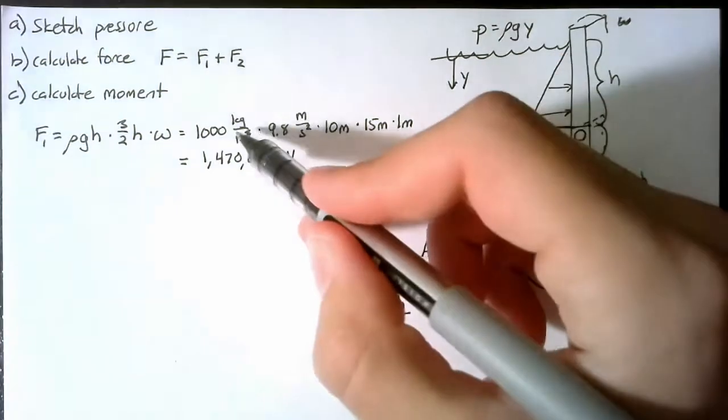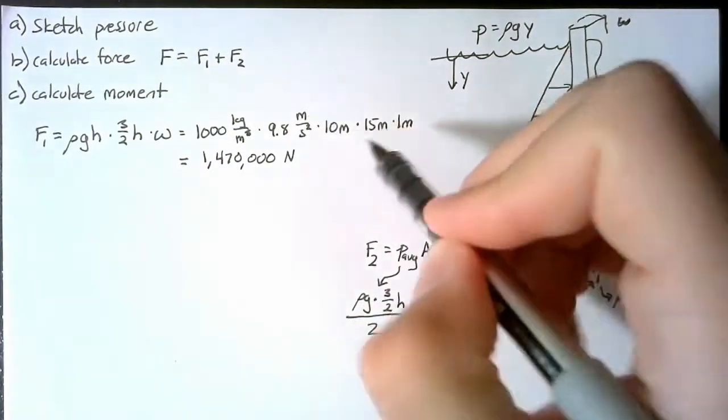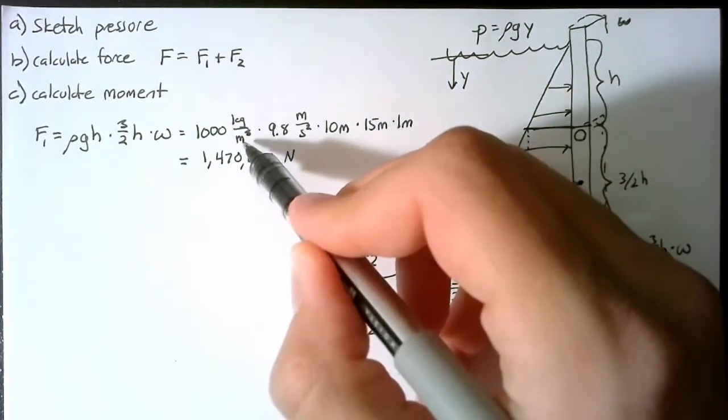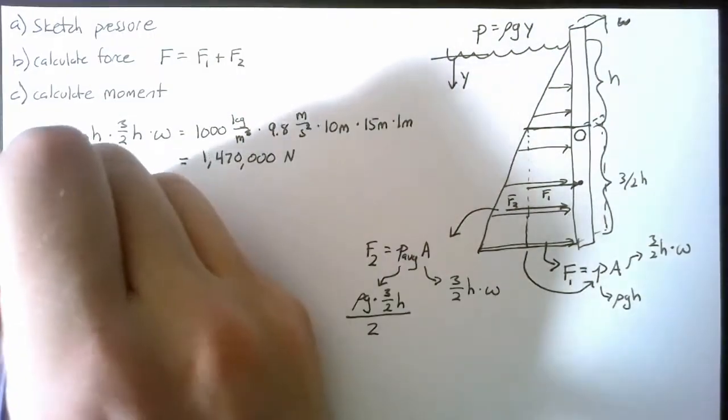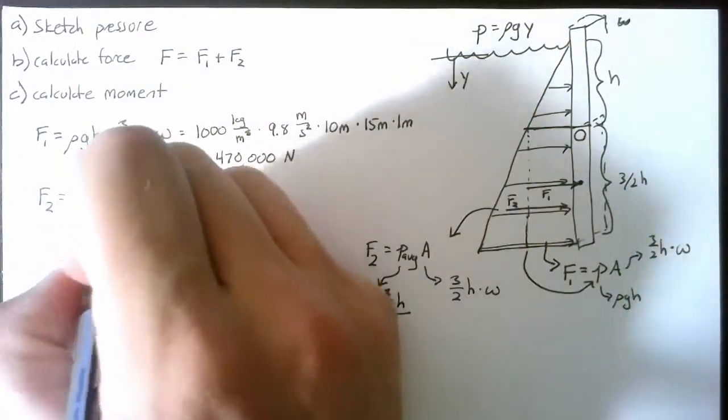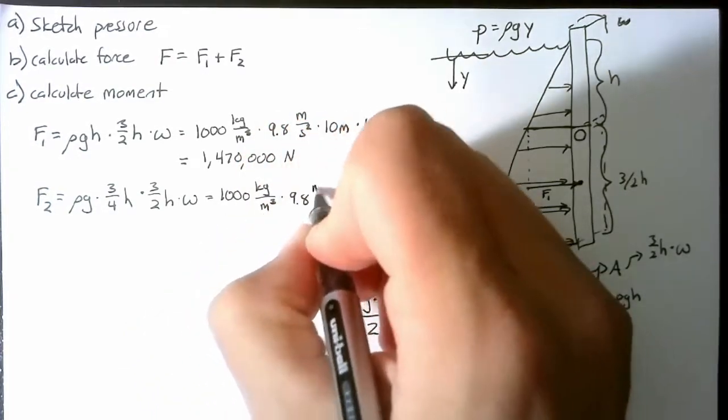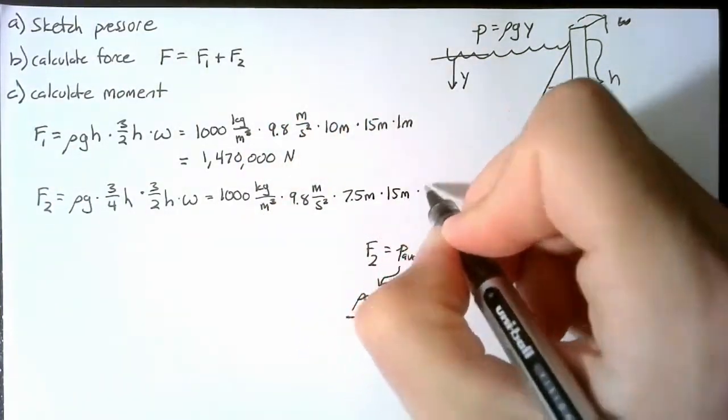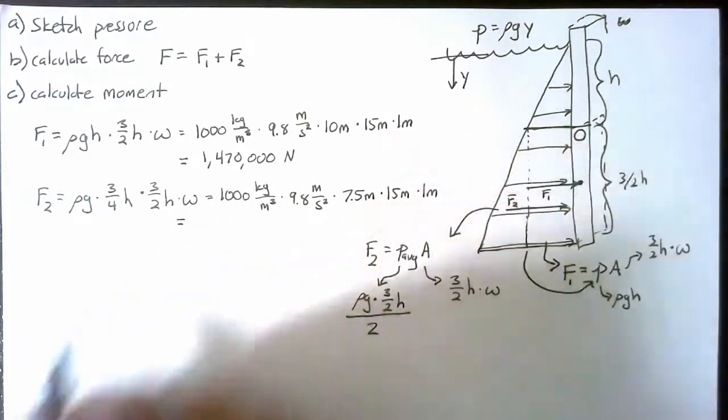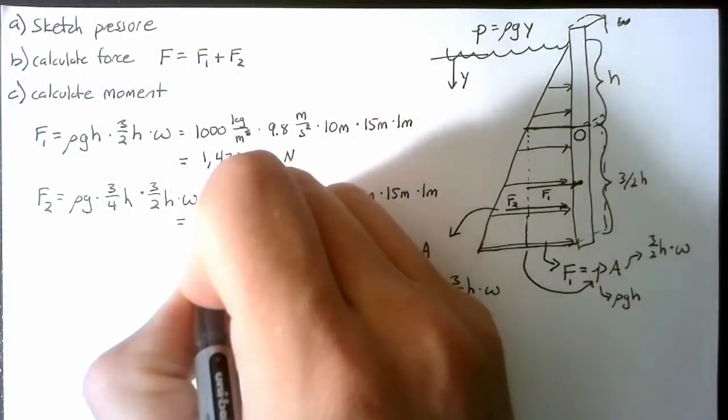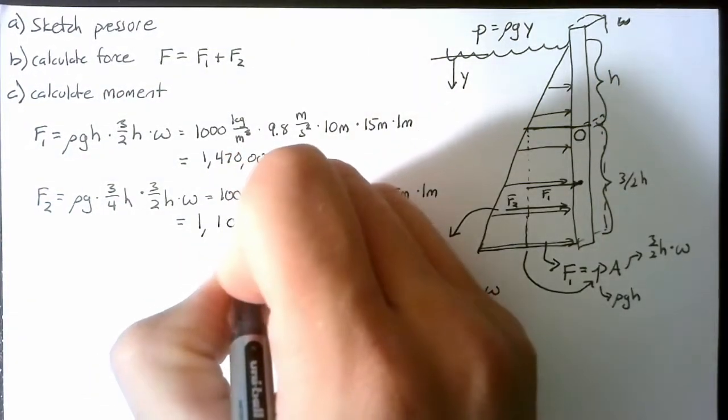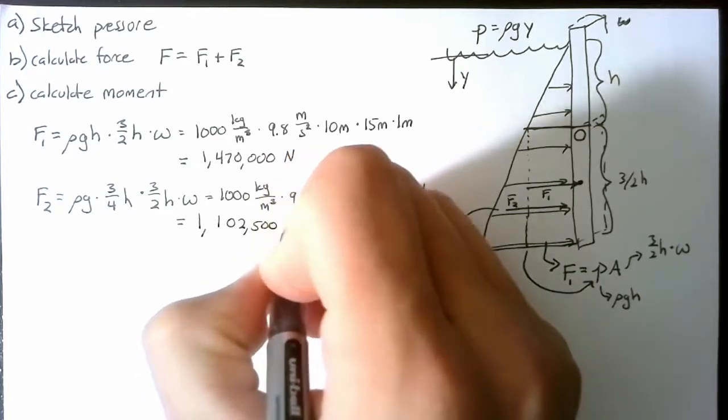Remembering, of course, that a newton is a kilogram meter per second squared. These three meters cancel out with these three meters. Our second force, writing this out again. And again, we plug this into a calculator. And this time we end up with 1,102,500 newtons.